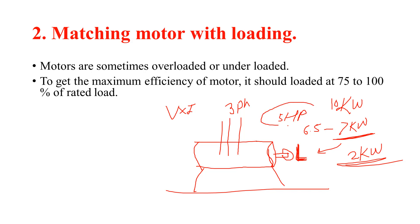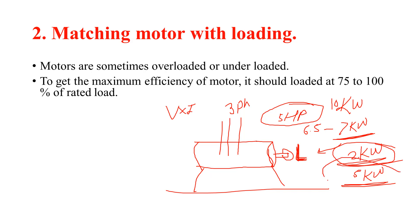If you have 7 kW supplied but only 5 kW load, you are under-loading the motor. In this case, losses are created and energy is wasted. When your motor is at full load, losses are reduced and energy is saved.